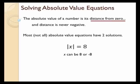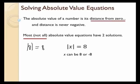So most — not all — of these equations that we're going to deal with have two solutions. It's not going to be all of them, it's going to be most of them. Here's a very simple one right here on the screen: the absolute value of x equals 8. The absolute value of positive 8 is equal to 8, and the absolute value of negative 8 is also equal to 8. So my answer can be 8 or negative 8.